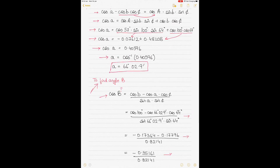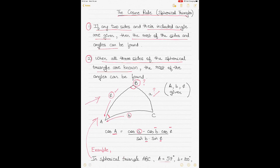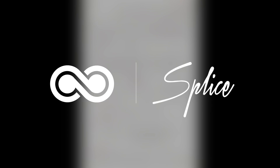This example showed how to use the cosine rule to solve a spherical triangle — normally used for great circle and composite great circle sailing questions. We also have Napier's rules for spherical triangles, covered in the next video. Remember: use the cosine rule when two sides and the included angle are given, or when all three sides are given to find the remaining angles.